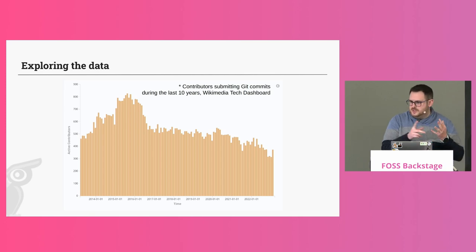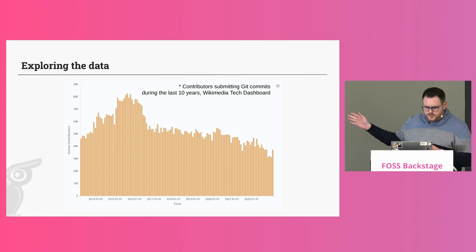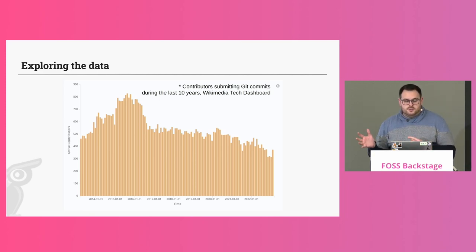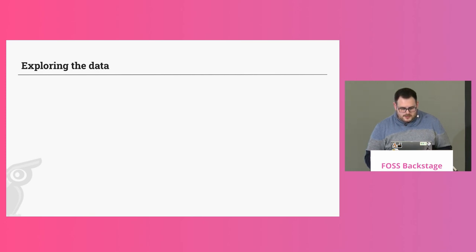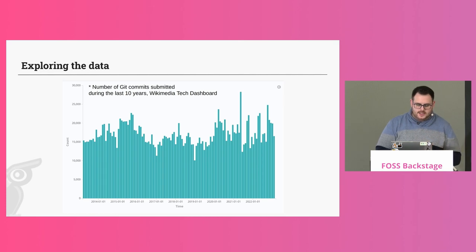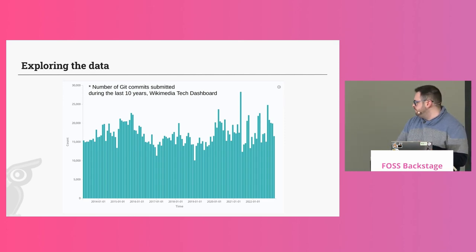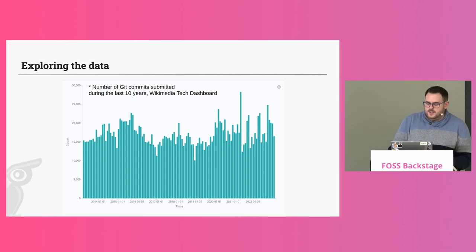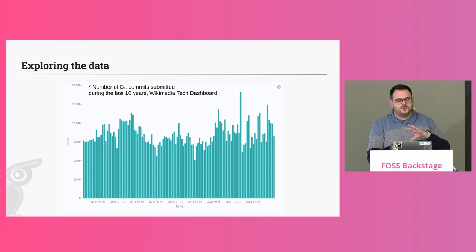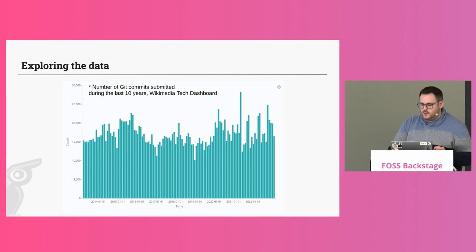We could measure other things from other tools like issues, pull requests, how much time it takes to close things. Here we're focusing on people sending commits each month — each bar represents one month — showing the number of active contributors over the last 10 years. We can also see the number of git commits submitted during this period for the Wikimedia projects. These are fairly basic metrics. You need to have your set of goals, ask yourself the right questions, and then have a set of metrics that help you answer those questions.